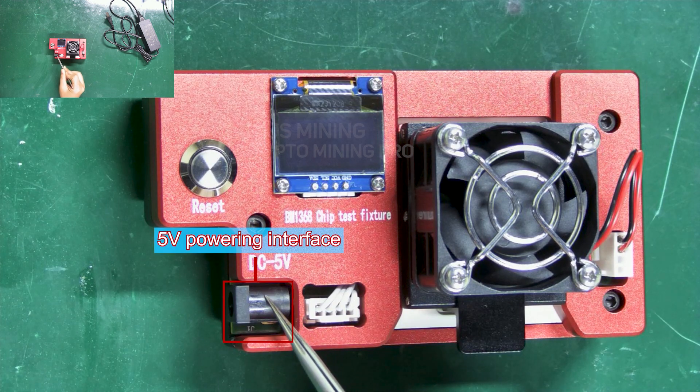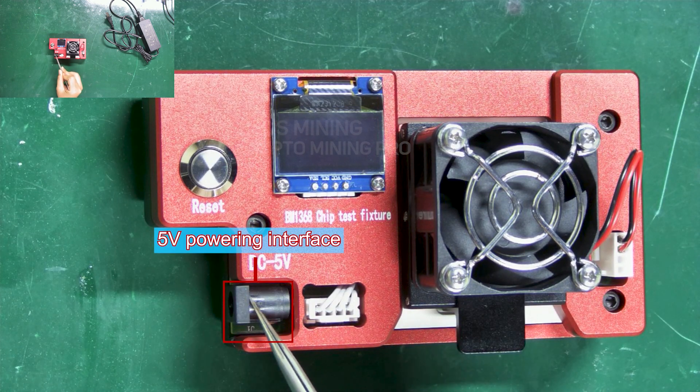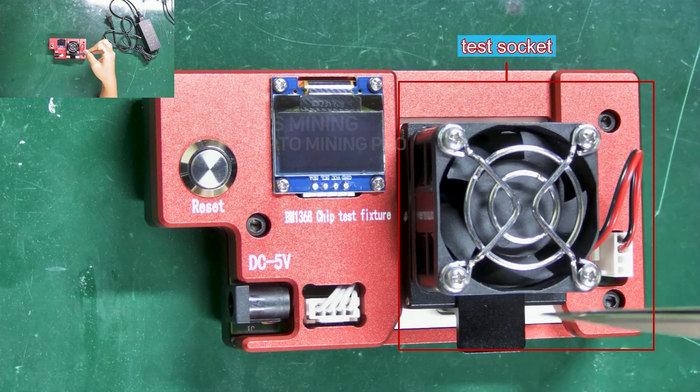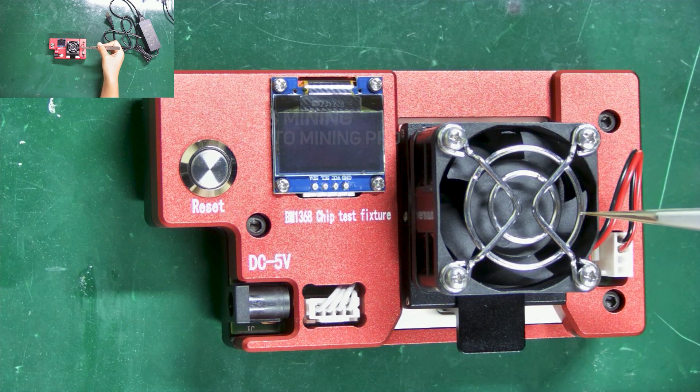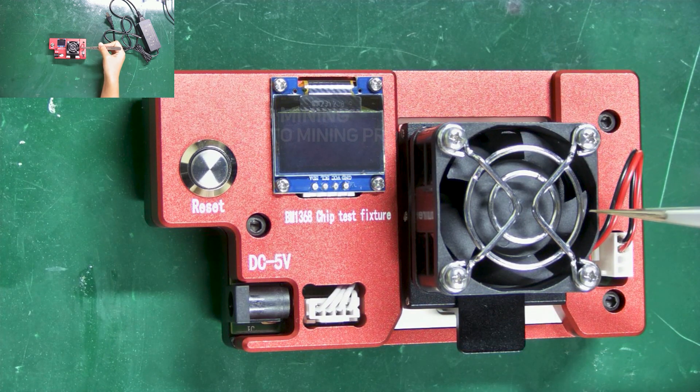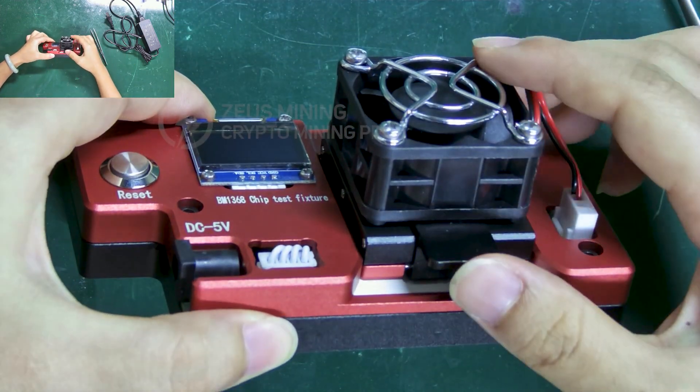Here is the 5 volt powering interface. This area is its test socket. The fan above can dissipate heat for the chip during the test process. Open the test socket.